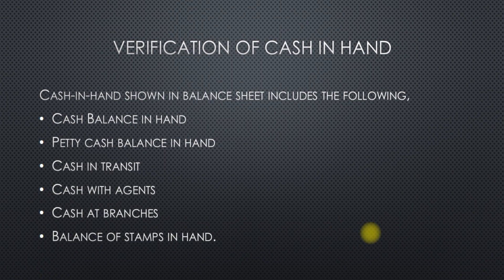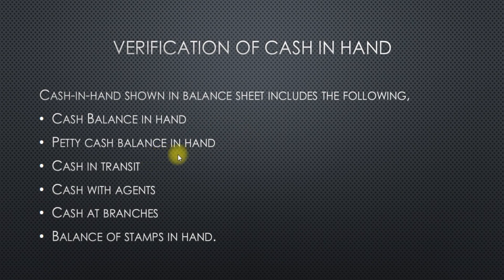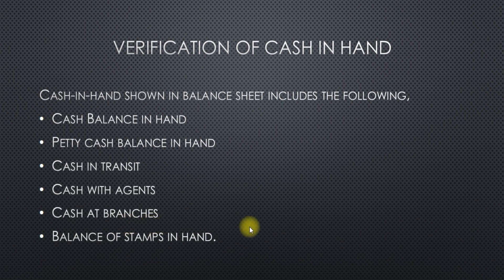Verification of cash in hand: generally the cash in hand shown in the balance sheet includes the following items — cash balances in hand, petty cash balance in hand, cash in transit (that is, cash not in any registers but in transit), cash with agents, cash at branches, and balance of stamps in hand.